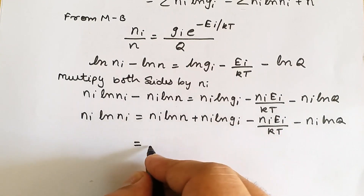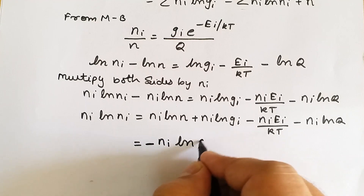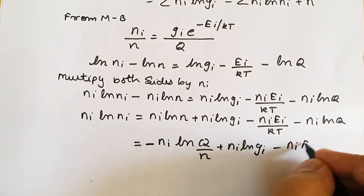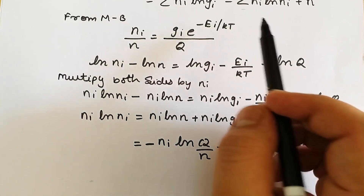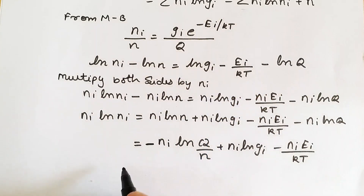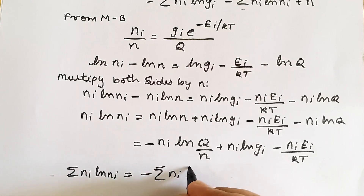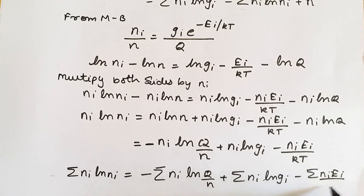Taking minus common, we group the Q and N terms together, giving minus Ni·ln(Q/N) plus Ni·ln(gi) minus Ni·Ei upon kT. Now taking summation over all quantum states: summation of Ni·ln(Ni) equals minus summation of Ni·ln(Q/N) plus summation of Ni·ln(gi) minus summation of Ni·Ei upon kT.